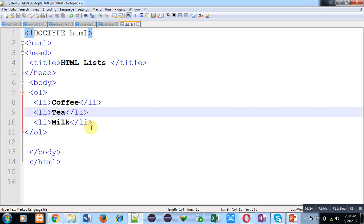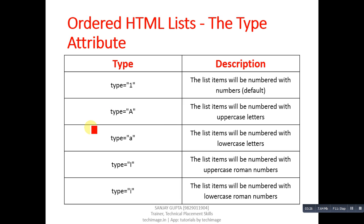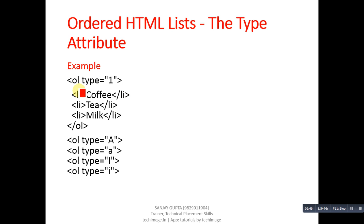If you want to apply different kinds of numbering to list items, you can use these type values: type 1, type A, type a (lowercase), type I (Roman numerals), or type i (lowercase Roman). You can use any of these CSS type attributes to start a list item with a particular digit or alphabet.